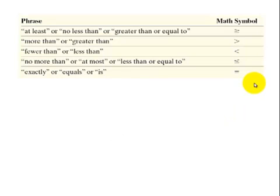In this slide, here's some common terms for math symbols. At least is the same thing as saying greater than or equal to. More than is the same thing as saying greater than. Fewer than is the same thing as saying less than. No more or at most is the same thing as saying less than or equal to.